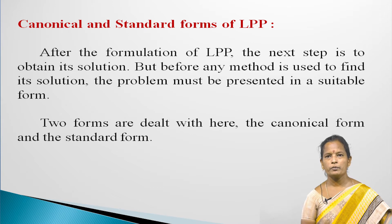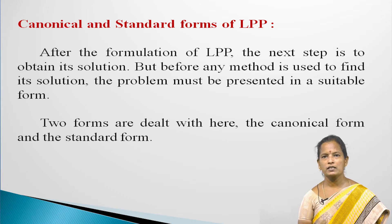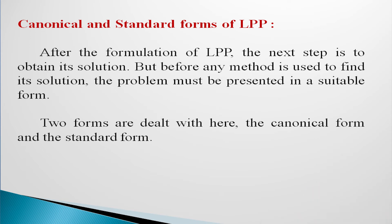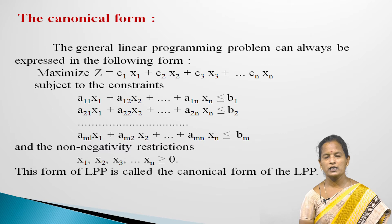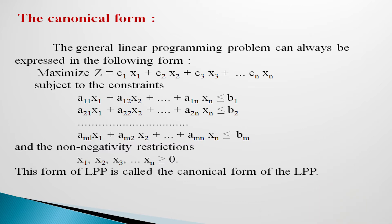Canonical and Standard Forms of LPP: After the formulation of an LPP, the next step is to obtain its solution. Before any method is used to find its solution, the problem must be presented in a suitable form. Two forms are dealt with here — the canonical and the standard form. The general LPP can always be expressed in canonical form as: maximize Z equal to c1x1 plus c2x2 ... cnxn, subject to constraints aij xj less than or equal to bi, and non-negativity restrictions x1, x2, ..., xn greater than or equal to 0.